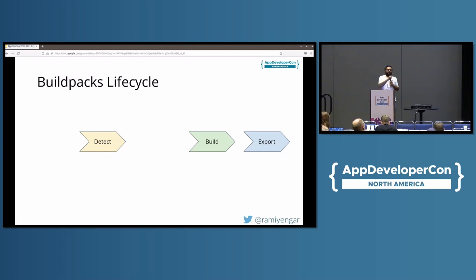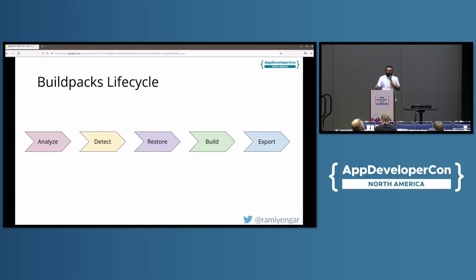Buildpacks follow a lifecycle where the main steps are to detect, to build, and to export from source. They also optimize further through steps called Analyze and Restore, which take advantage of caching when you run a build for the second time.